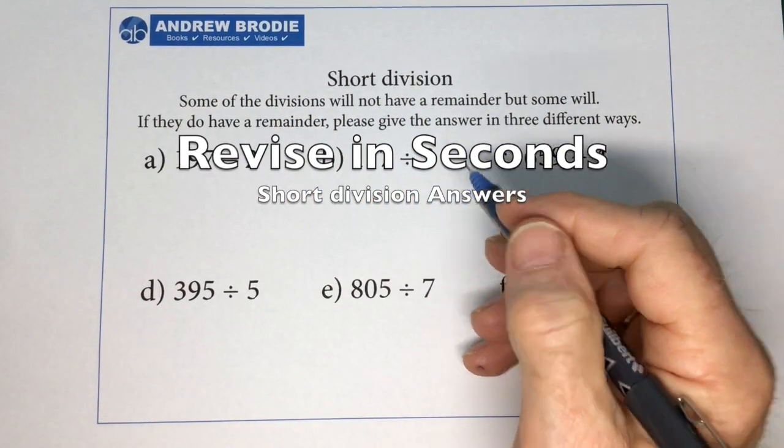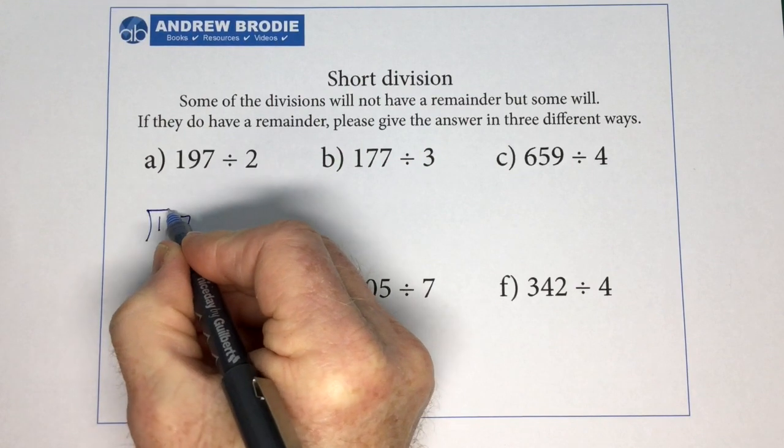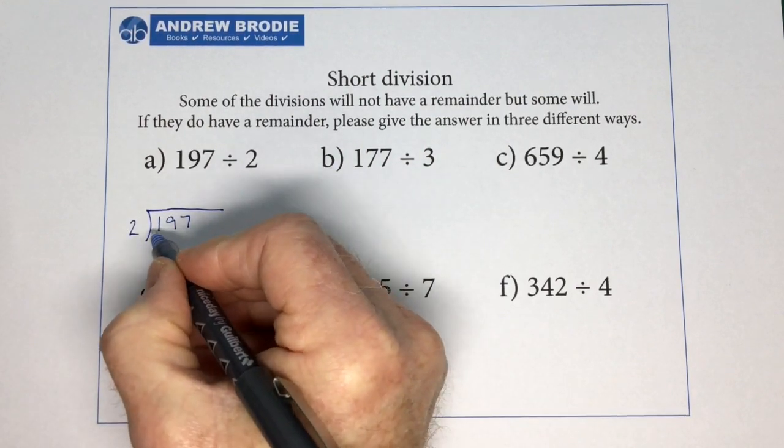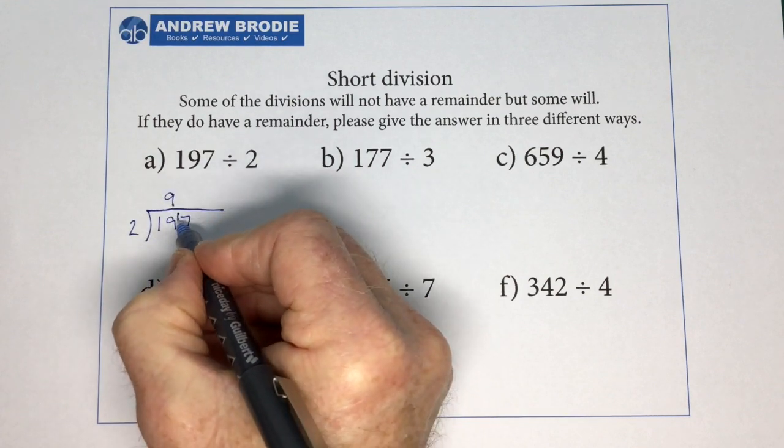Here are the answers to the short division questions. So 197 divided by 2. 2 into 1 won't go. So 2 into 19 goes 9 times, because 9 2s are 18.